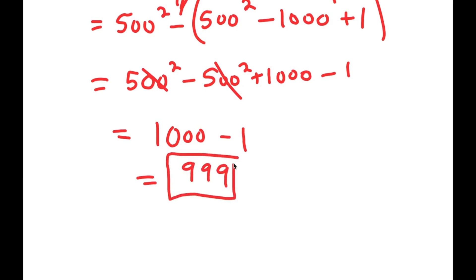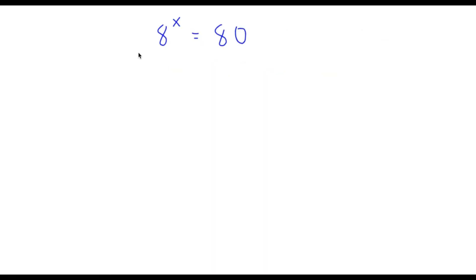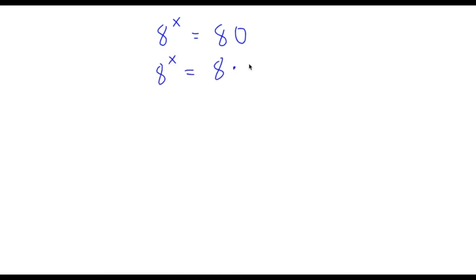So again I get 999 as my answer. Welcome back to Clicking Academics. In today's video I'm going to teach you how to solve this exponential equation: 8 to the power of x is equal to 80. The first thing I'm going to do is rewrite 80 as 8 times 10, so we have 8 to the power of x equals 8 times 10.